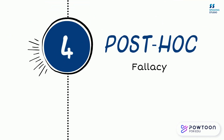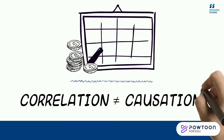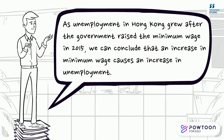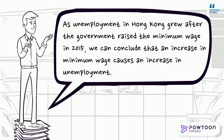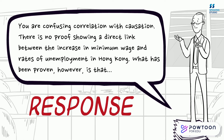Finally, the post-hoc fallacy is where correlation is confused with causation. As unemployment in Hong Kong grew after the government raised the minimum wage in 2015, we can conclude that an increase in minimum wage causes an increase in unemployment. You're confusing correlation with causation. There's no proof showing a direct link between the increase in minimum wage and rates of unemployment in Hong Kong. What has been proven, however, is that…